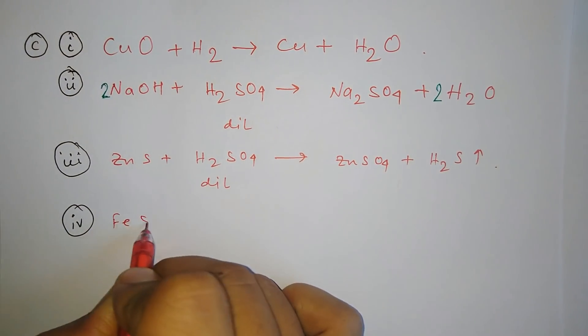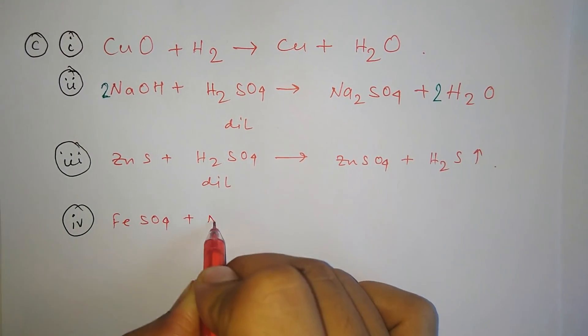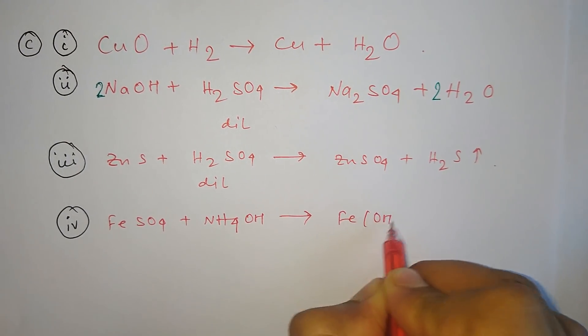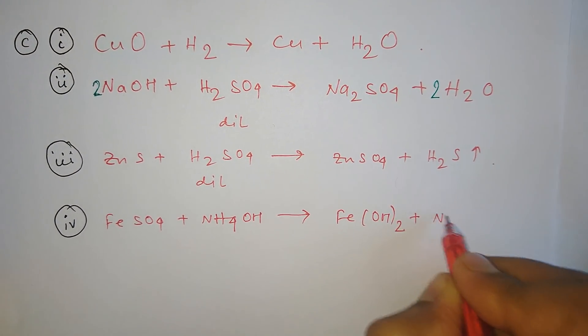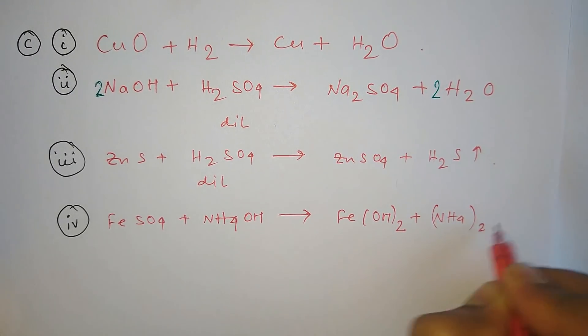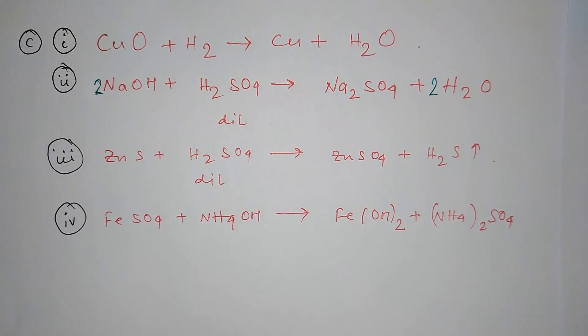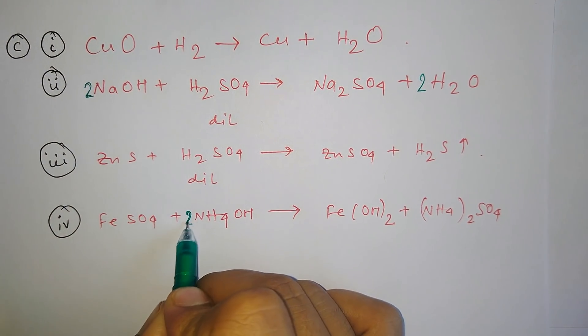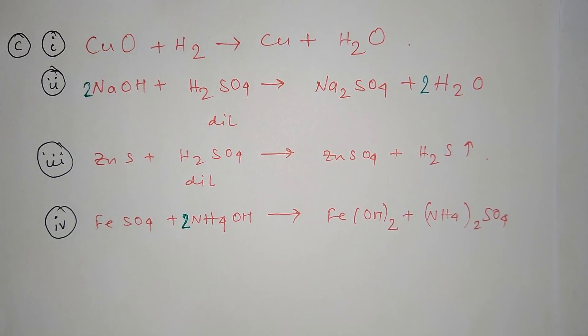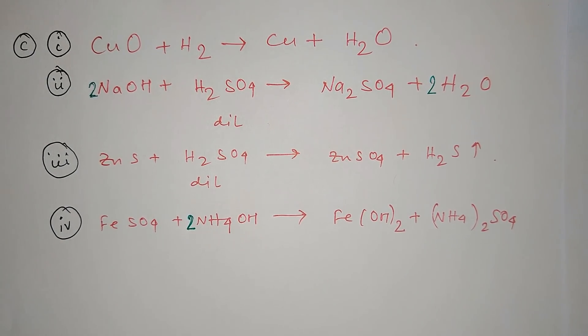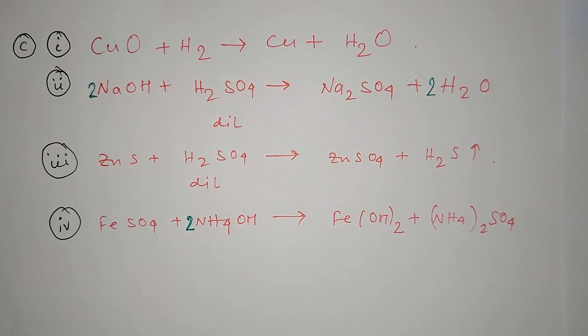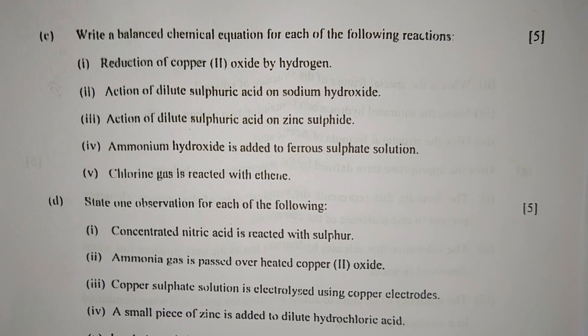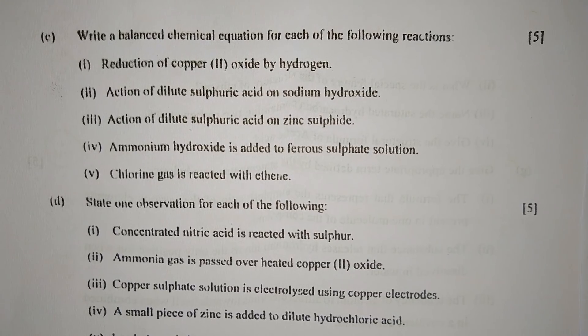Part four: Ammonium hydroxide is added to ferrous sulfate solution. Ferrous sulfate reacts with ammonium hydroxide to form ferrous hydroxide and ammonium sulfate. If you balance it, then a two will be here: FeSO4 plus 2NH4OH will give Fe(OH)2 plus (NH4)2SO4.